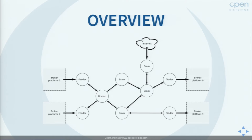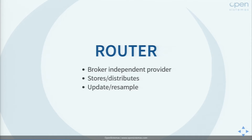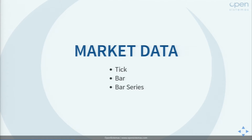Just on the right of feeder we can find router. Router is a broker-independent provider — similar to feeder but broker-independent. Its purpose is to store and distribute market data among the agents in the system. The rest of the agents can subscribe to updates coming from router. It is also able to update the market data in memory with information coming from feeders, and can resample data if necessary. Market data is implemented using NumPy arrays. The main data structures are ticks — the ask and bid prices at a given timestamp — the bar, which is open, high, low, close prices during a time span — and the bar series, which is a sorted series of bars.